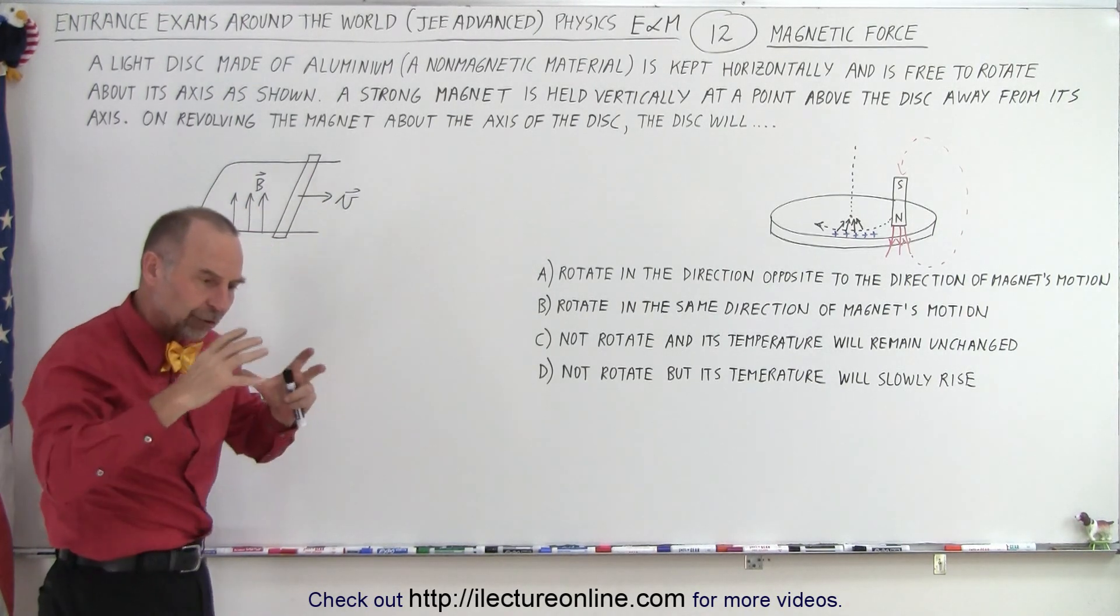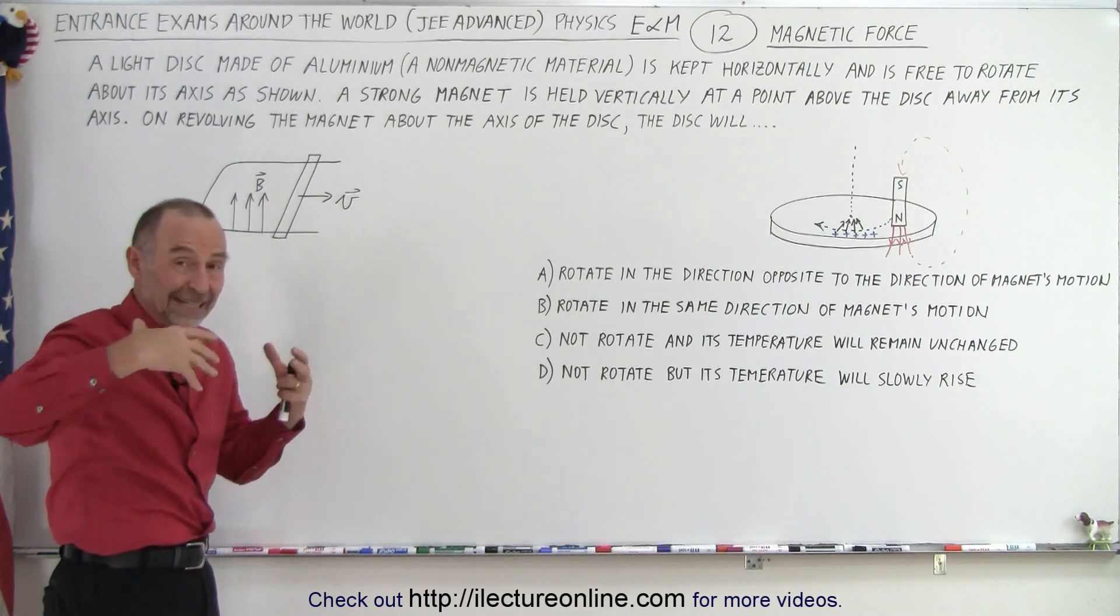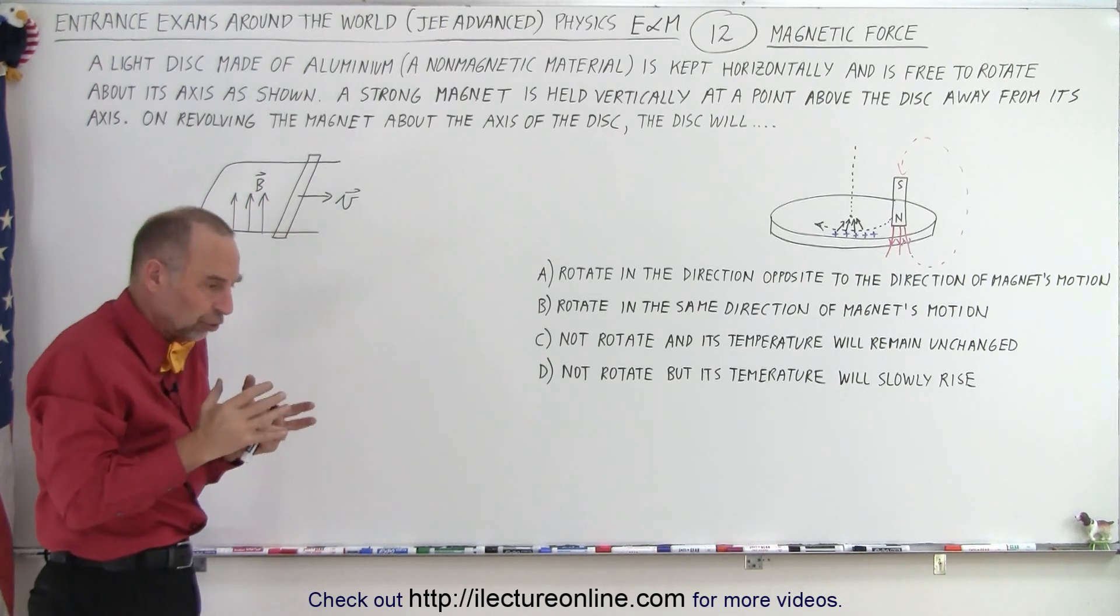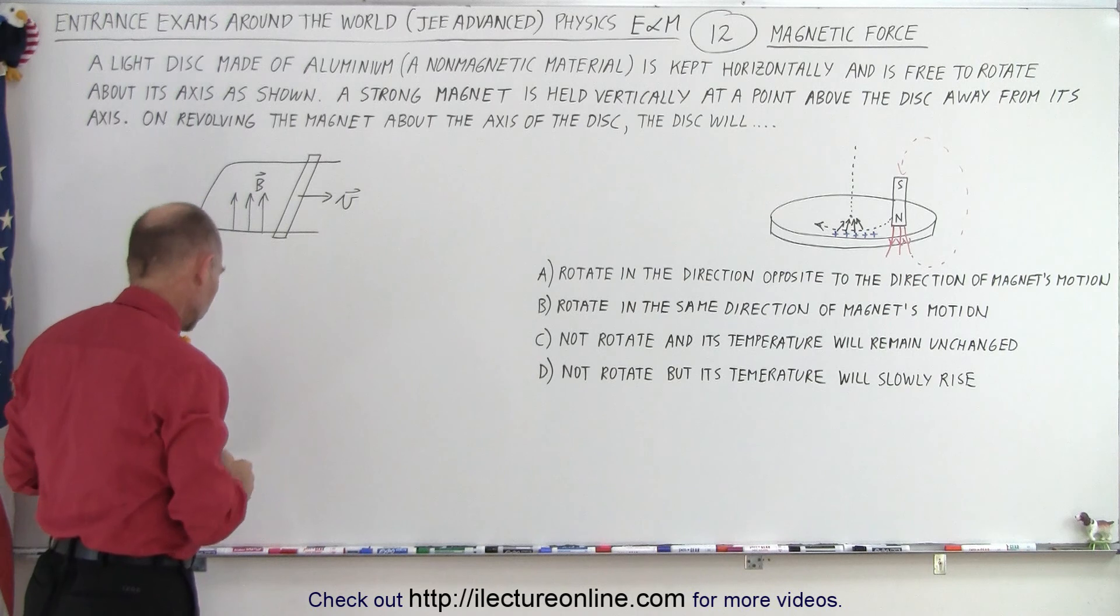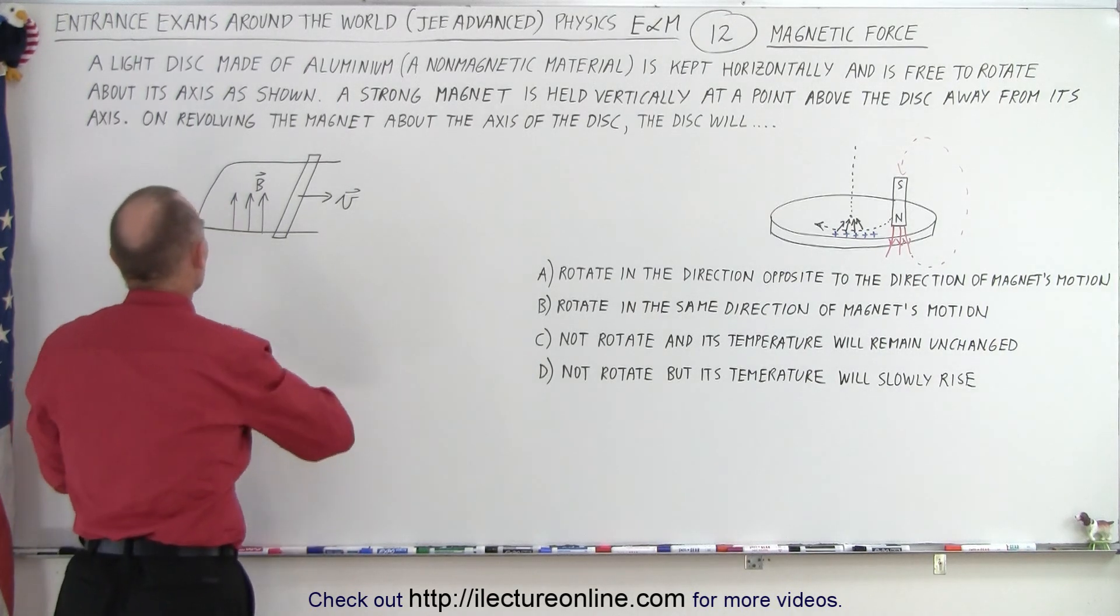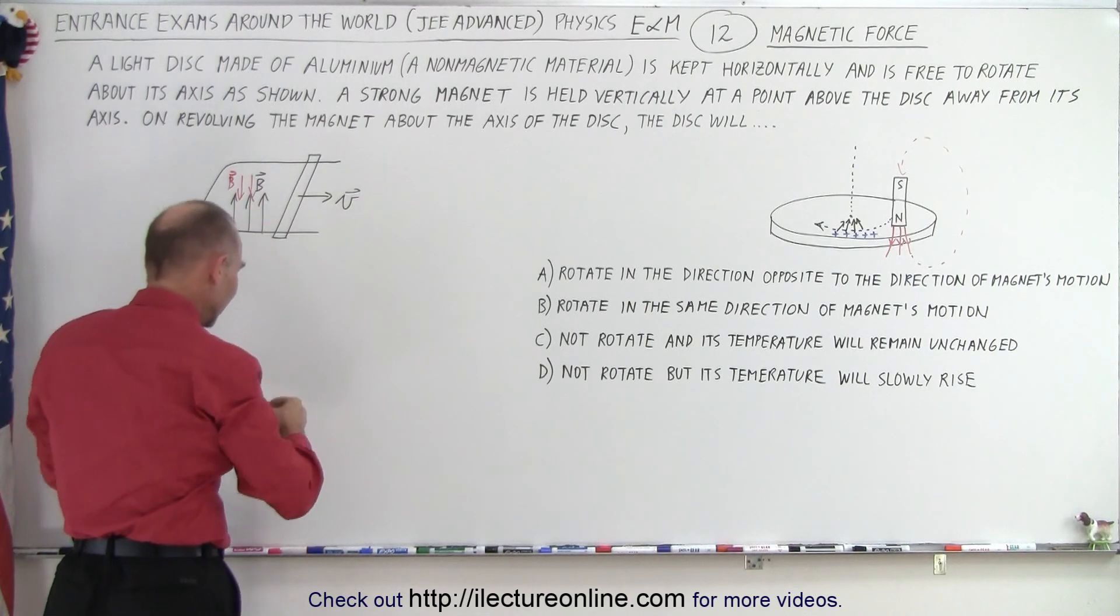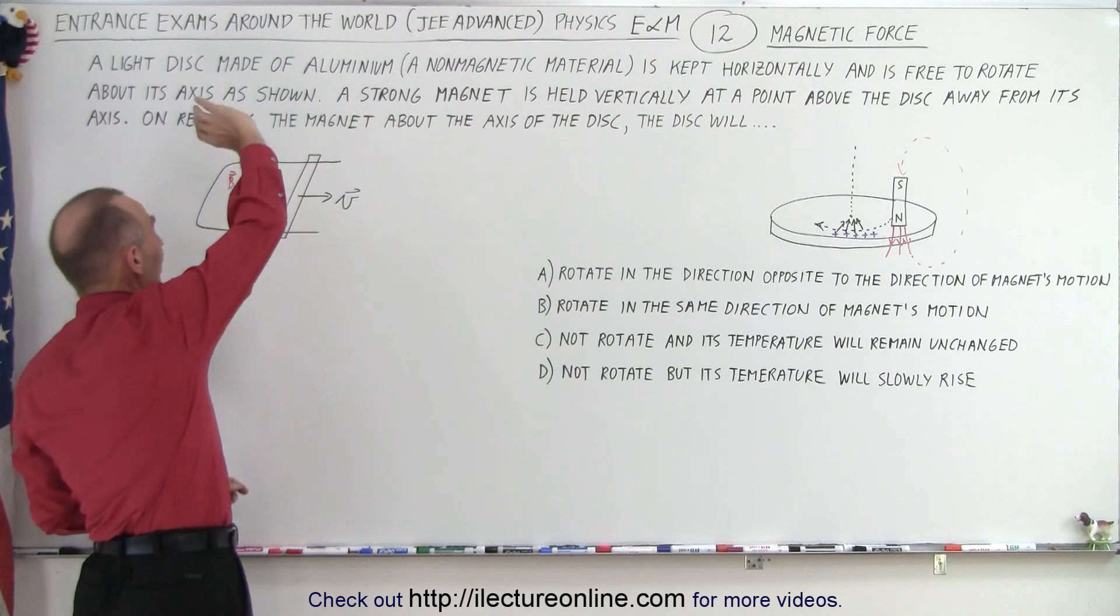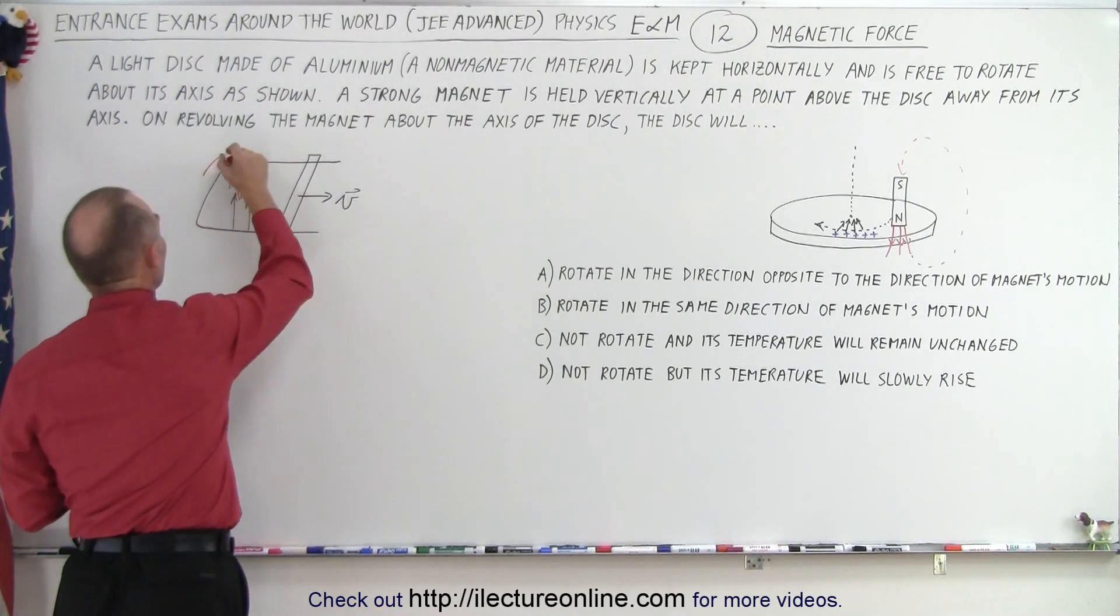When we cause the flux to increase in the loop we set up an electromotive force, an E&M voltage, an induced voltage that induces a current that causes a magnetic field that opposes the change. So it's going to cause a field, an induced magnetic field in the opposite direction trying to prevent this from increasing, and of course then when we use the right-hand rule we can see that the current will then flow in a clockwise direction.